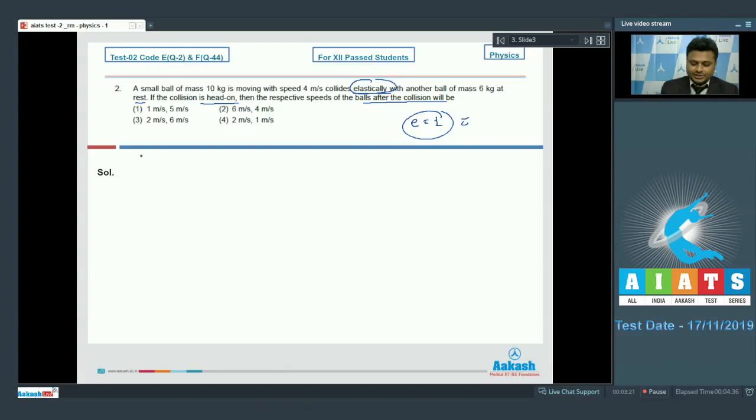Now let us consider the situation before collision: bigger ball, smaller ball, this one is 10 kg, this one is 6 kg. 6 kg is at rest, 10 kg is moving with 4 meter per second speed. Now after the collision, let us assume the speed of the balls are V1 and V2 respectively. So situation can be given as this one as V1, this one as V2, 10 kg, 6 kg.